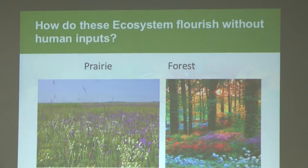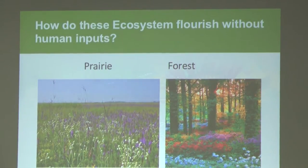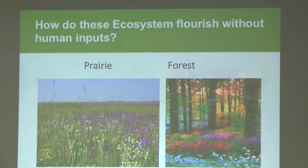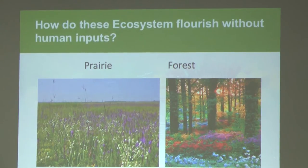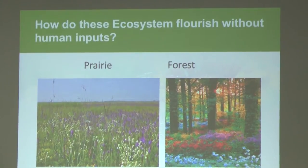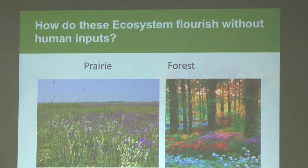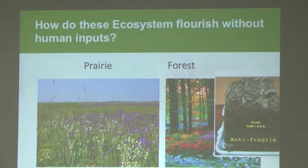What can we do for agriculture through biomimicry? Mimic the prairie and the forest. What do the prairie and forest have in common? They are covered 24/7, they have diversity, they have living roots 24/7, internal cycles capture the sun, and they all have animals. Are our agro-ecosystems like that? No, they are not.